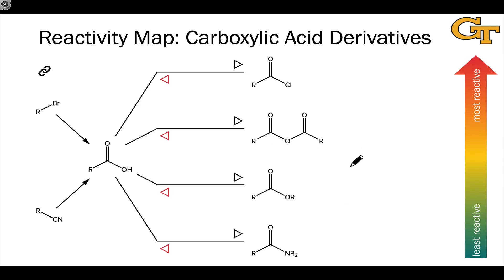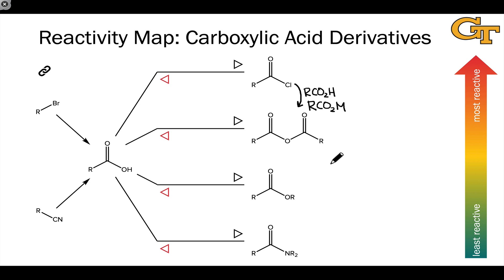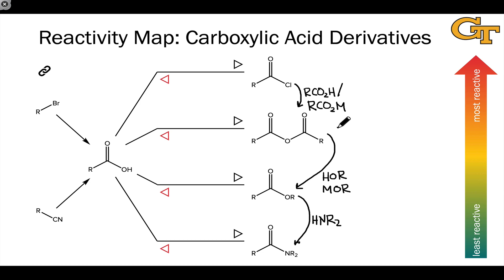At this point, we've come a long way from our reactivity map of the carboxylic acid derivatives. On this slide, everything is summarized by drawing a map of reactions that convert the different carboxylic acid derivatives from one to the other. Going down this ladder is a simple matter of treatment with a nucleophile: from acyl chloride to anhydride, treat with a carboxylate (RCO2M); anhydride to ester, treat with an alcohol or alkoxide (MOR); ester to amide, treat with a primary or secondary amine. It's also possible to jump down more than one level — for instance, from anhydride to amide by treating with an amine nucleophile.